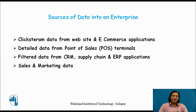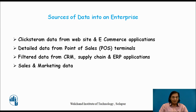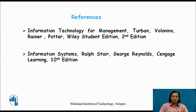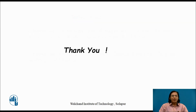What are the sources of data in an enterprise? First, data comes from clickstream data from websites and e-commerce applications — every time you do something on an e-commerce website, data is generated. Data also comes from point-of-sale terminals during sales activity, from customer relationship management activities, ERP applications, supply chain applications, and sales and marketing. In today's lecture we discussed the difference between data, database, and information, and how data is useful for generating information. Thank you.